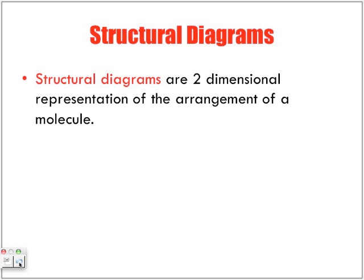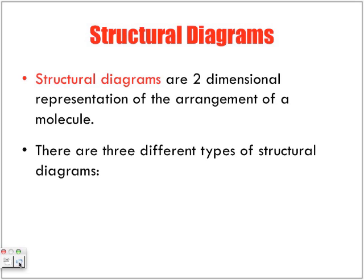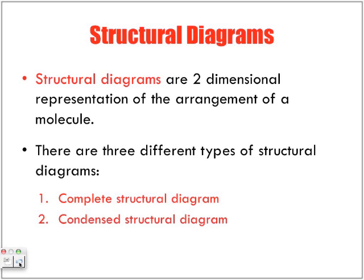Structural diagrams are two-dimensional representations of the arrangement of a molecule. In this course, you're going to be asked to draw and name some of these hydrocarbons based on structural diagrams. There are three types of structural diagrams you're going to be responsible for. One of them is a complete structural diagram, where you show all the carbons and all the hydrogen bonds. You'll also have a condensed structural diagram, where you don't worry about drawing hydrogen bonds but instead write the number of hydrogens associated with each carbon. And finally, the simplest — but potentially tricky — is the line structure diagram.